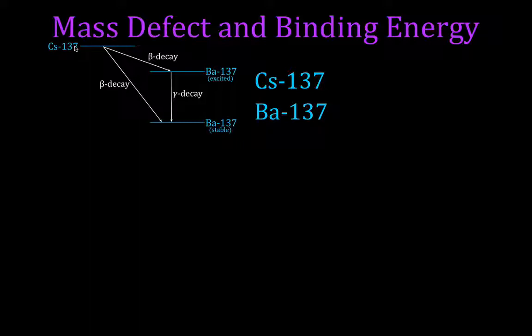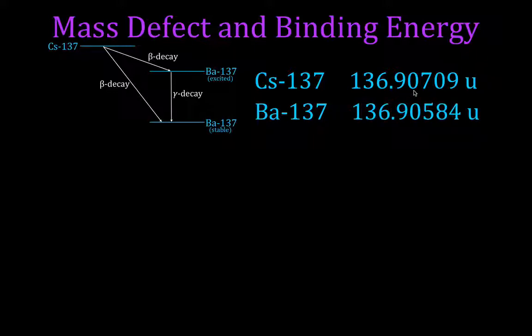So when we look up cesium-137, we look it up in a table, the mass of cesium-137 is 136.90709 atomic mass units. For barium-137, it's 136.90584 atomic mass units.